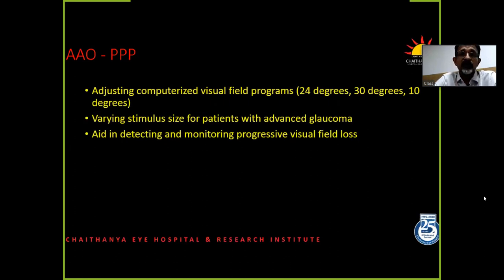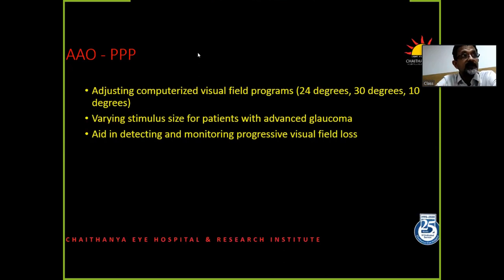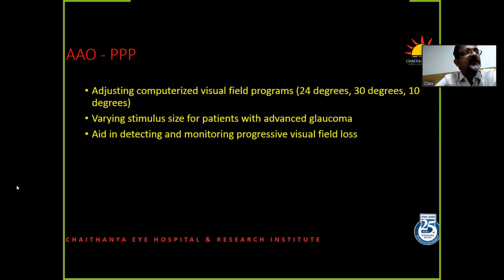Computerized visual field is essential. They underline that we need to decide which program we use for each patient. An advanced glaucoma patient who doesn't have a 10-degree field — it doesn't make sense to do a 30-degree field. When we take a 10-2 program, we have many more points concentrating in the 10 degrees being tested, so a smaller change in that 10 degrees will be picked up in a 10-2 as opposed to a 30-2.